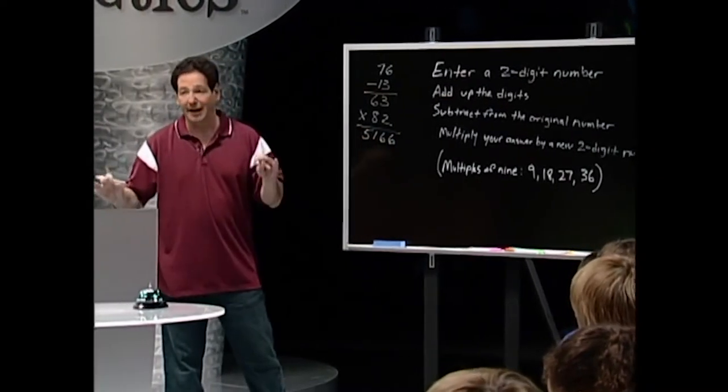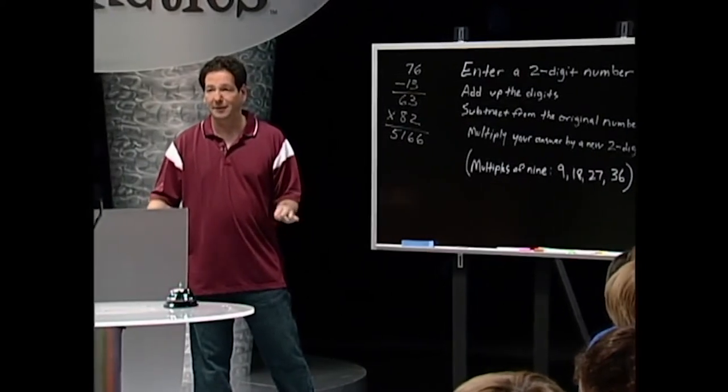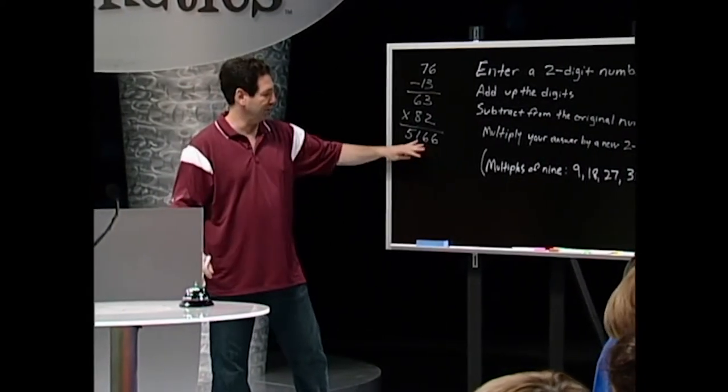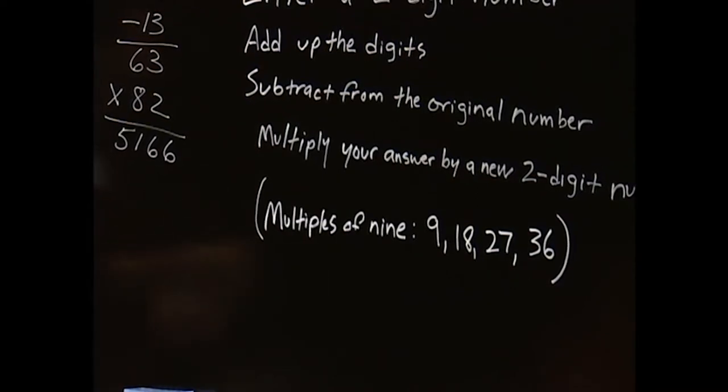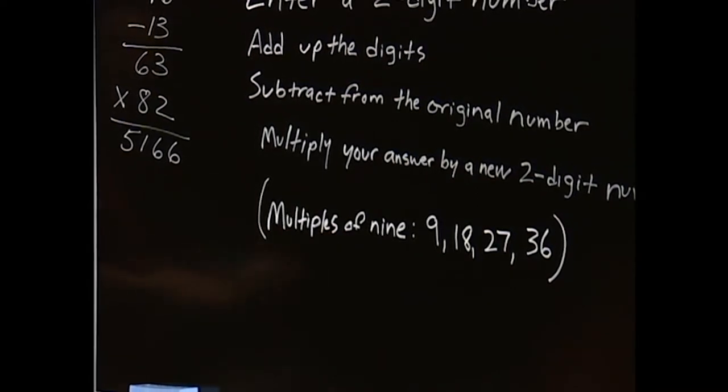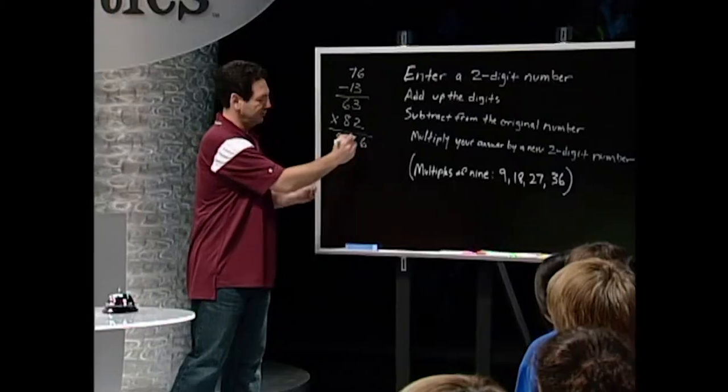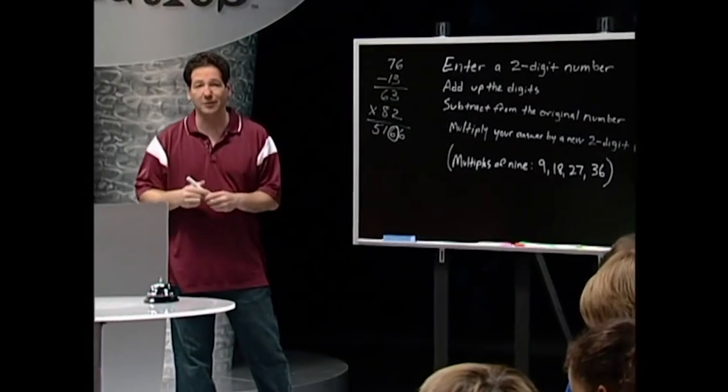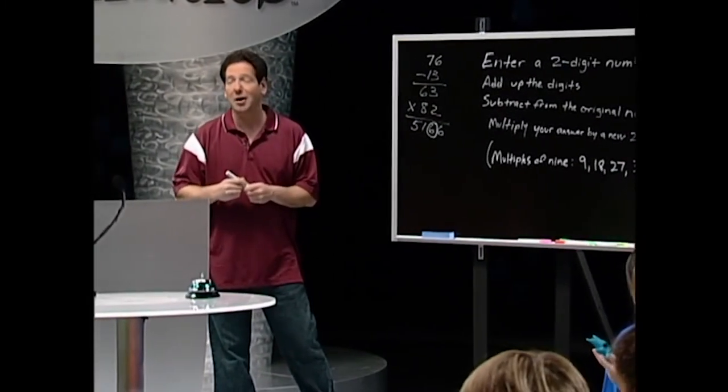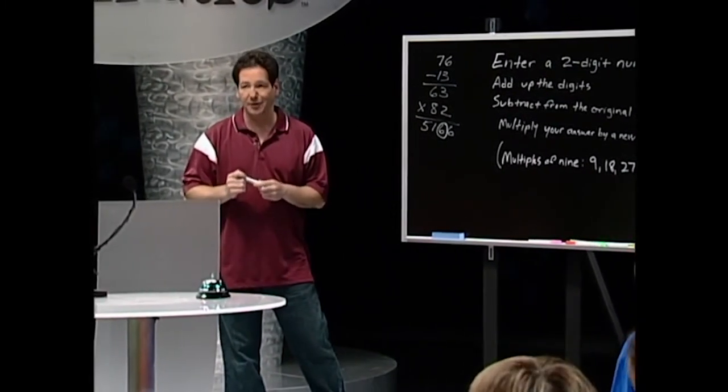Now, the last step is pick one of the digits in your answer and leave it out, but it cannot be a zero. So just take one digit in your answer, it cannot be a zero, and leave it out. So say I'm leaving the six out. Now, I'm going to come around, and I want you guys to read me the rest of the digits besides the number you left out.